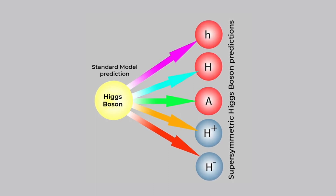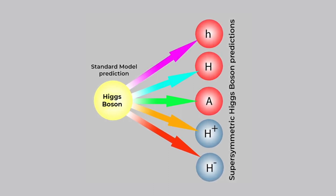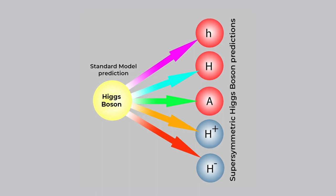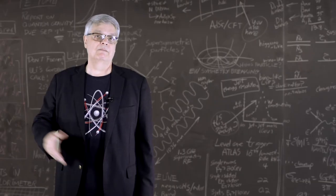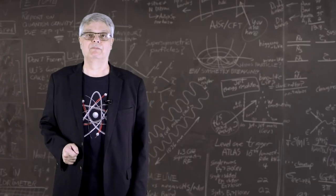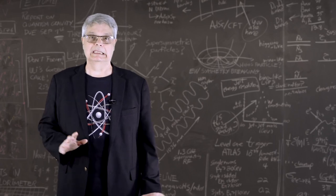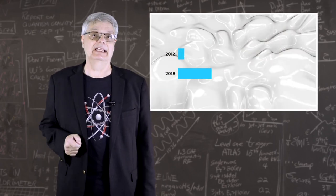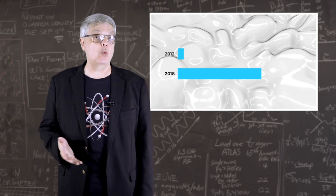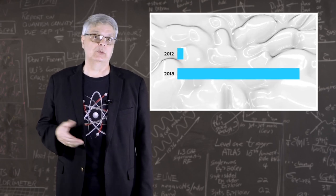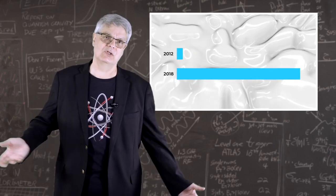Multiple Higgs bosons is a prediction of supersymmetric theories, so finding more than one would have been evidence for supersymmetry. But back then, that was all in the future. In 2012, we only had a little bit of data. Since then, each experiment has received nearly 20 times as much data as was used to make the discovery. So where do we stand?